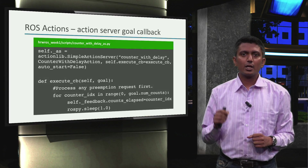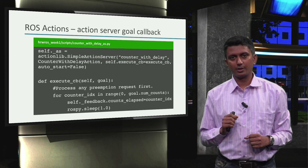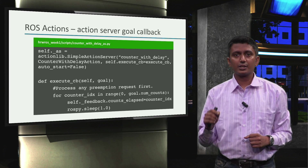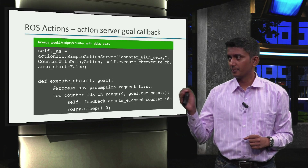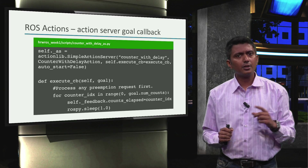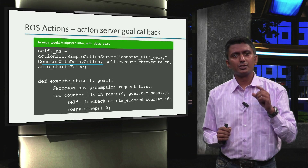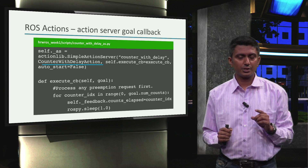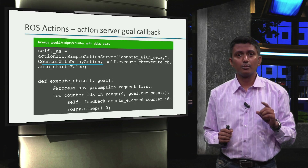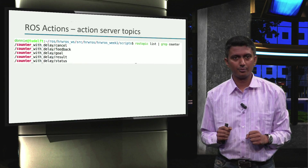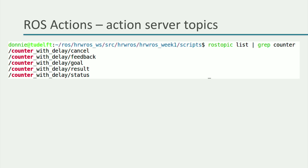A quick sneak peek into the action server code snippet: we see the action server initialization and the goal callback. Here too, the action server type is counter_with_delay_action. We will understand these code snippets in more detail in the code illustration in the following video. What is important here is to understand that the action server publishes four topics.